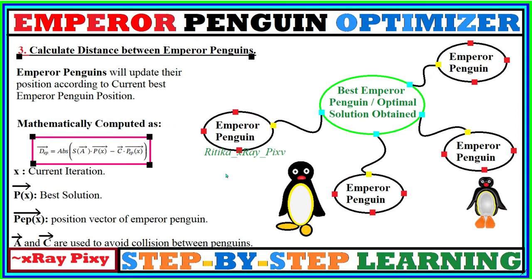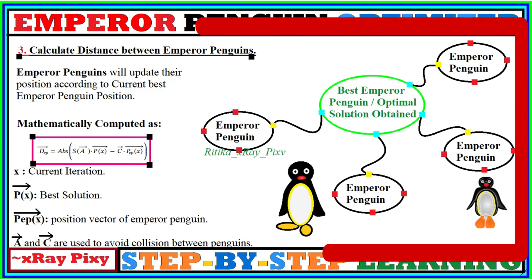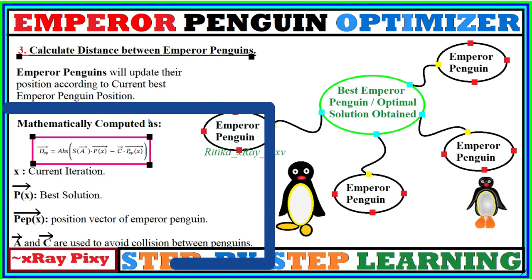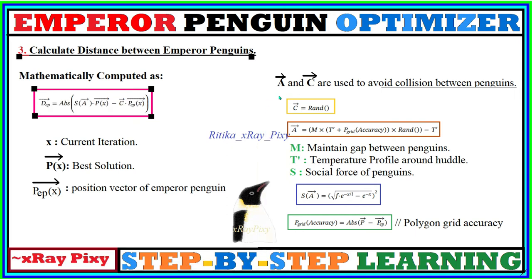After that, we calculate the distance between emperor penguins. Emperor penguins update their positions according to the current best emperor penguin's position. Mathematically, this is computed using an equation where x is the current iteration, the position vector of the emperor penguin, and the px vector represents the best or optimal solution in the current population. Here, a and c are constants used to avoid collision between the search agents — that is, between the penguins. The value of c is a normally distributed random value.